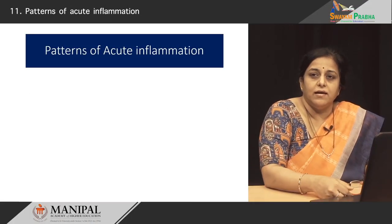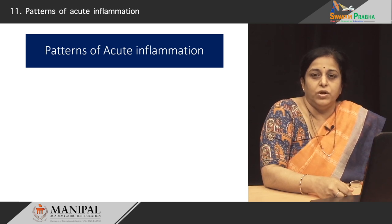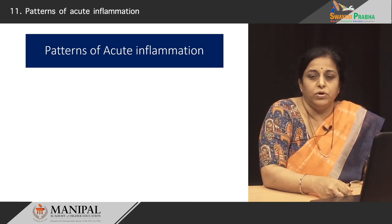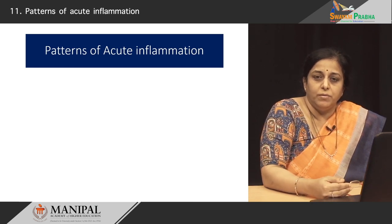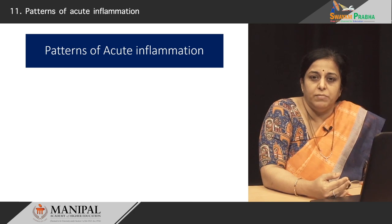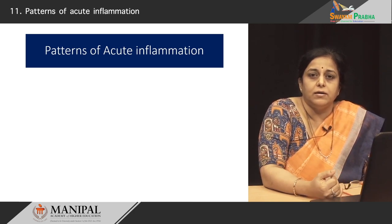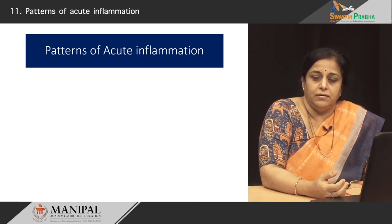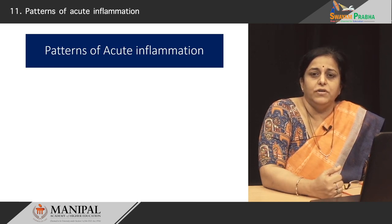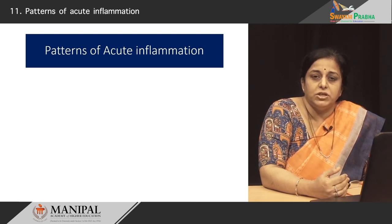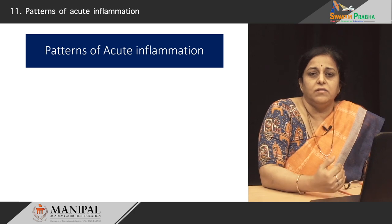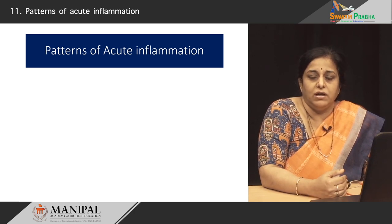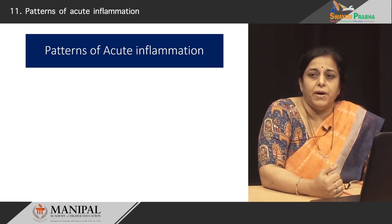Hello students. Last class we learnt about acute inflammation — we learnt about the outcome of acute inflammation, that most of the time the inflammatory response is able to tackle the injurious agent resulting in complete resolution. We also saw that sometimes when there is significant tissue injury there can be a scar, and if there is a persistent injury and the inflammation is not able to tackle the injurious agent, then there is persistent inflammation — what is called chronic inflammation. We will learn more about chronic inflammation in today's class, but before that we learn about some patterns of acute inflammation.